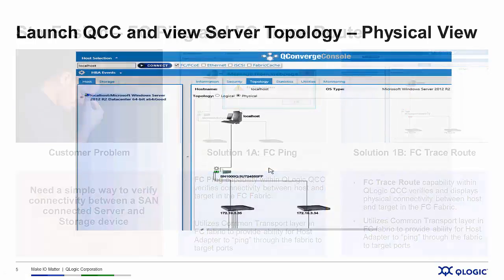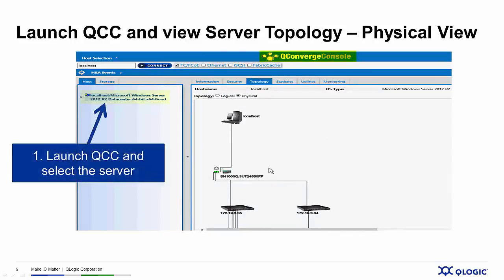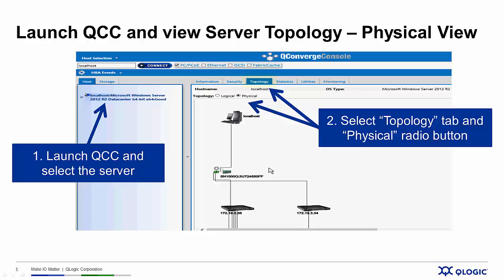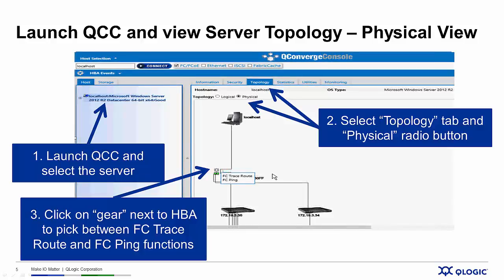Let's take a look at what's involved. The system administrator starts by launching the QConverge Console Utility and selecting the server he wants to check. Once he's selected the server, he goes across the top and selects the tab marked Topology, then clicks a radio button to get a physical view of the topology of the entire SAN. That's a feature of QConverge Console, which is a free utility for managing Q-Logic fiber channel adapters downloadable from Q-Logic.com. Once he's got the physical topology view, he clicks on the little gear next to the fiber channel adapter, which brings up the FC-TraceRoute and FC-Ping dialog box.